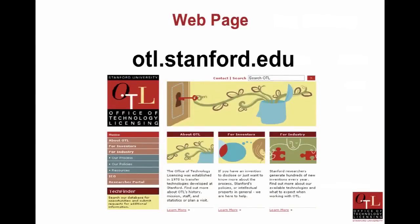The next section is about where you can find more information about our office and our technologies. Our website is otl.stanford.edu. The main portion of the website includes a 'for inventors' section where you can find information about disclosures, and a 'for industry' section where you can find our standard license agreements. Down at the bottom you'll see TechFinder, where you can learn more about technologies available from Stanford for licensing — and if you have an interest in doing a project on a Stanford technology, you can find it there.